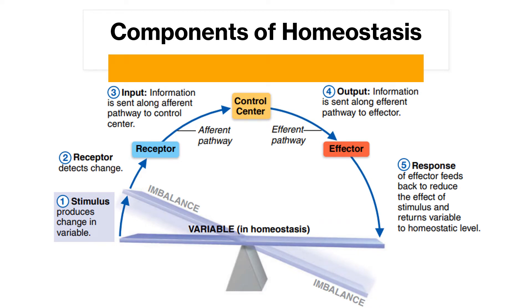The components of homeostasis involve five steps: stimulus, receptor, input, output, and response. A stimulus is produced when there is a change in a variable. The receptor detects that change, then information is sent along the afferent pathway to the control center. From there, information is sent along the efferent pathway to the effector. A response is then produced, and the effector's response feeds back to reduce the effect of the stimulus and return the variable to its homeostatic level.